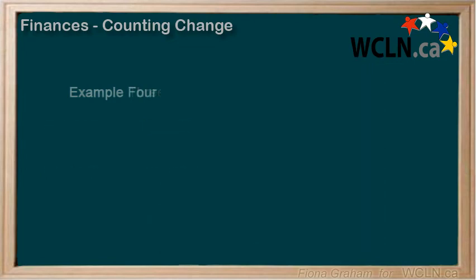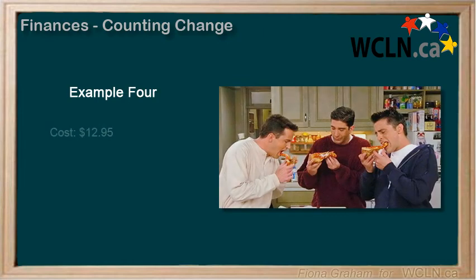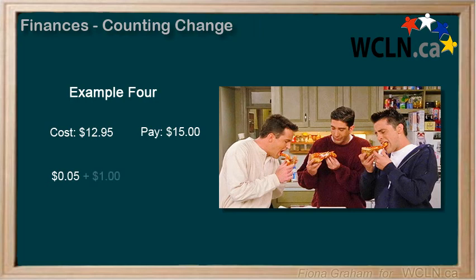Here's a final example. Let's say you buy a large pepperoni pizza for $12.95 and you give the cashier $15. We don't have to do any rounding up or down. First, let's work out the cents — we would add 5 cents to get to the next nearest 10, bringing us to $13. Then we'd add another dollar to get to $14, and then another dollar to get up to $15. So that would be 5 cents plus a dollar plus a dollar, meaning $2.05 would be your change.